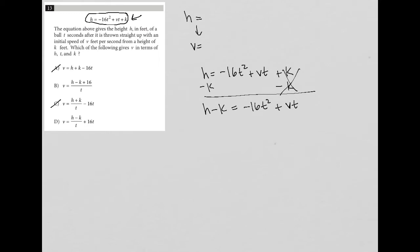Second of all, I can add 16t squared to both sides. So then it's gone from here. So I have h minus k plus 16t squared equals vt.